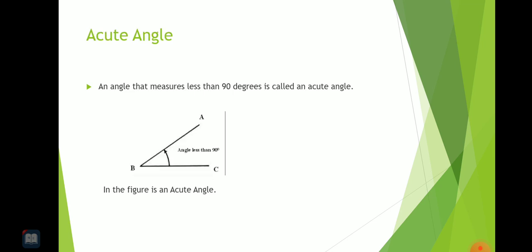Acute angle. An angle that measures less than 90 degrees is called an acute angle. Here you can see that ABC, this angle is less than 90 degrees. In the figure, ABC is an acute angle.